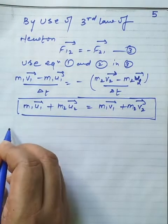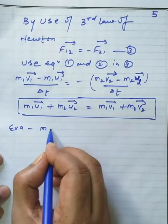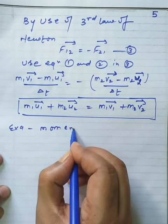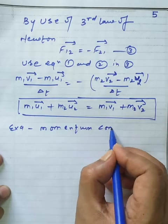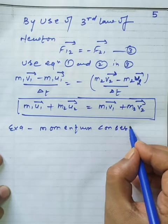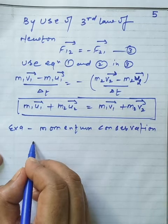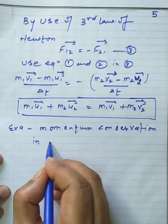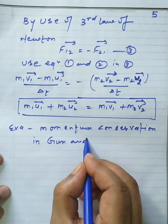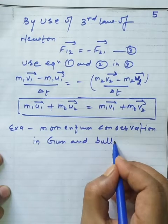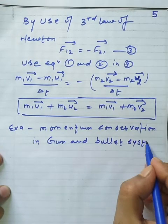Another example of momentum conservation is the gun and bullet system.